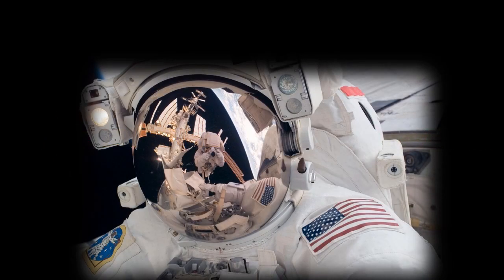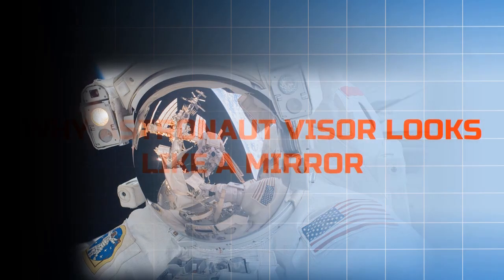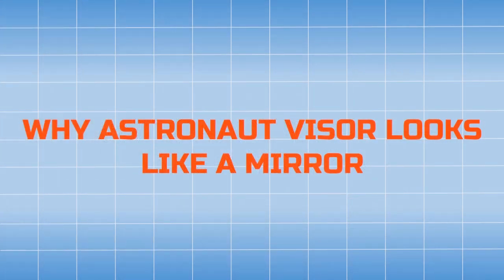Most people must have seen this type of astronaut suit. The helmet or visor of this suit is quite special. As you can see in this image, the other astronaut taking the photo is visible on the visor like it's a mirror, but you can't see the face of the astronaut wearing the visor. Why does the astronaut visor look like a mirror?